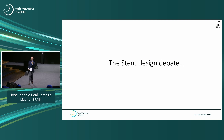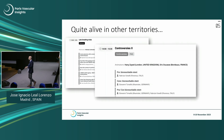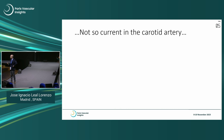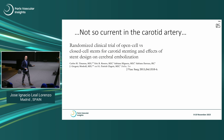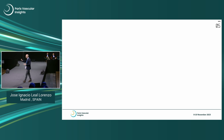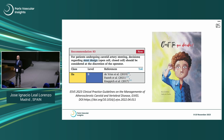The stent design debate is quite alive in other territories — superficial femoral artery, below-the-knee — but not so vibrant in the carotid territory, probably because we've seen a lot of conflicting results comparing open-cell, closed-cell, and newer designs. Conflicting results lead to recommendations like: 'stent design should be considered at the discretion of the operator.'